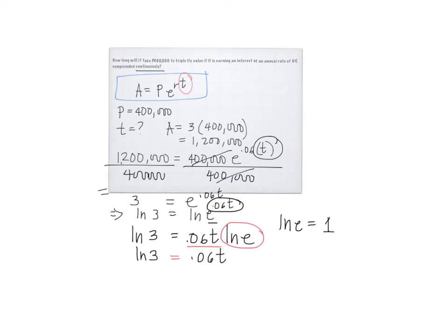Now, to solve for t, all we need to do is divide by 0.06 on both sides, and that will cancel 0.06, so that t is basically ln 3 over 0.06.